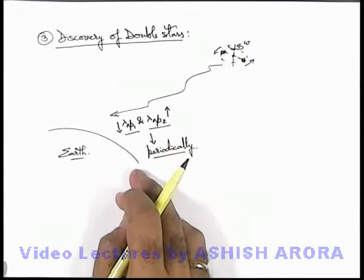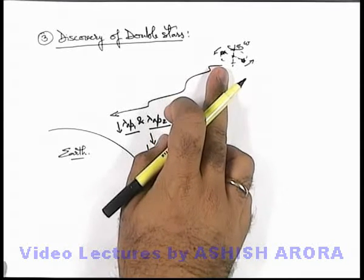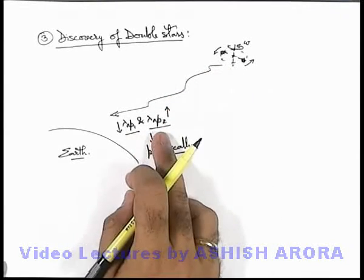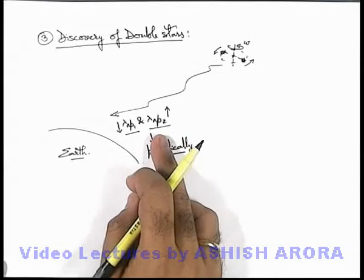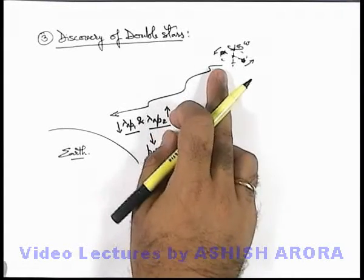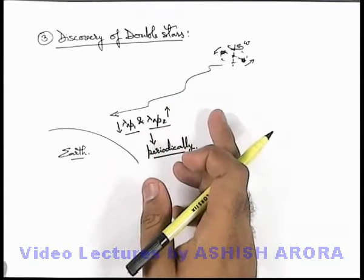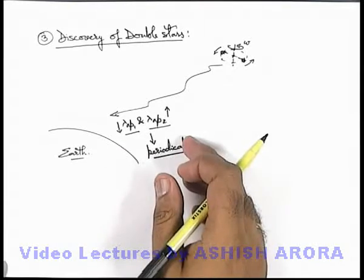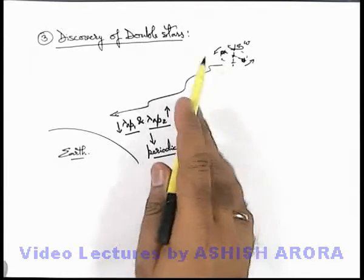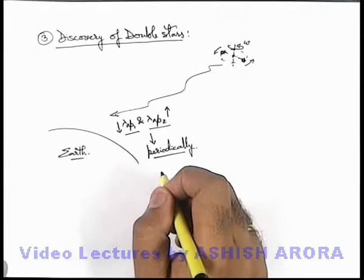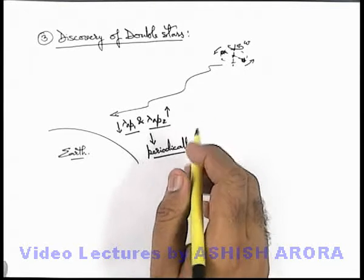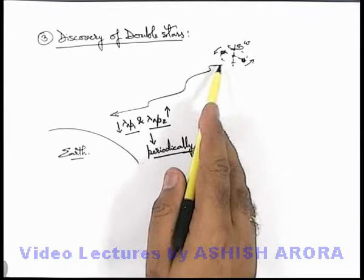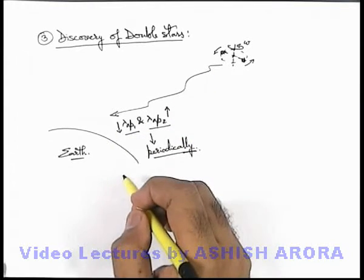So in this way, the stars which were earlier assumed to be a single star — later, by using Doppler shift, the idea was evolved that it might be a double star, and later it was physically proven by the discovery of radio telescopes that actually it is a combination of stars called a doublet of stars. And this was detected by periodic variation of the light which approaches earth.